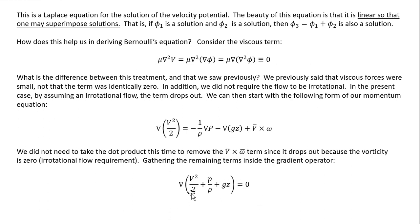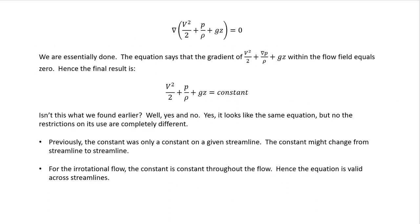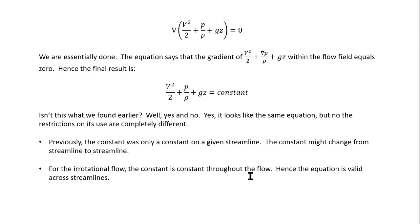Gathering the terms within the gradient operator, we get the gradient of kinetic energy plus flow energy plus potential energy equals zero over the entire flow field. Since the gradient of this quantity equals zero, the quantity itself — v²/2 + p/ρ + gz — must be a constant. Crucially, unlike the previous result, this constant is constant throughout the entire flow field, not just along a given streamline. Therefore for irrotational flows Bernoulli's equation is valid across streamlines, whereas for rotational flows it is only valid along a streamline.